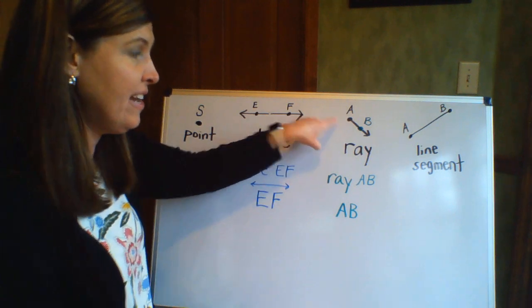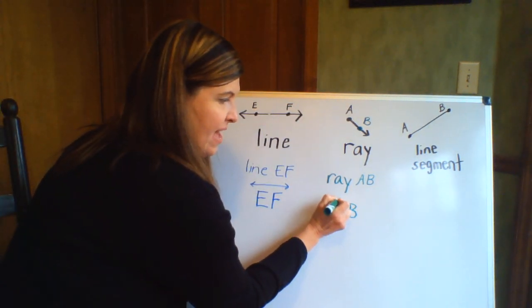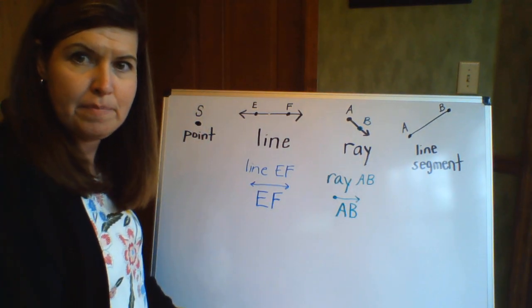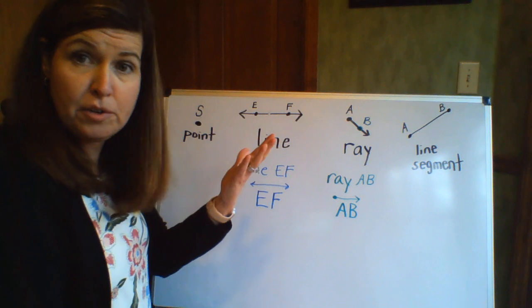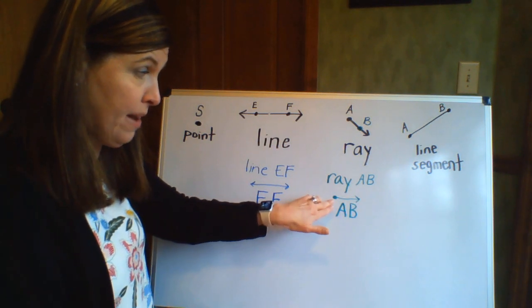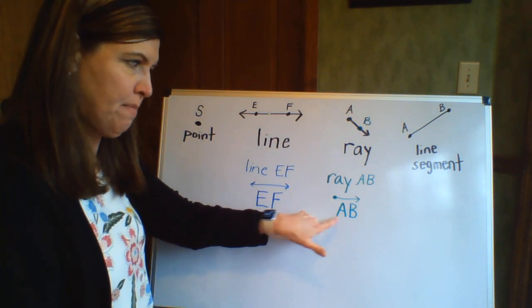And the ray symbol on top of it is that line with an endpoint connected to it. So if on your answer for your work, if you wrote this—a line with an endpoint with the arrow—I would say, oh, I know that's ray AB.